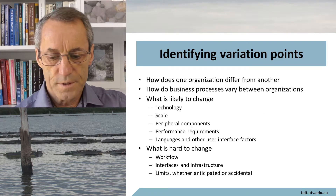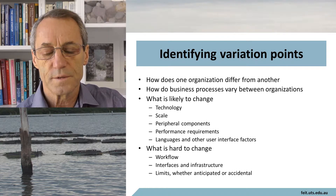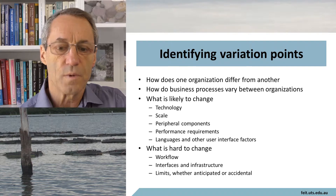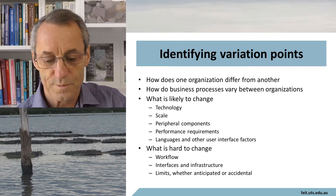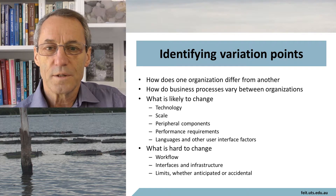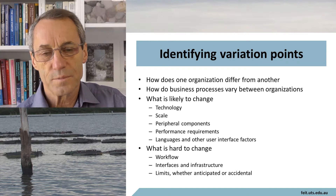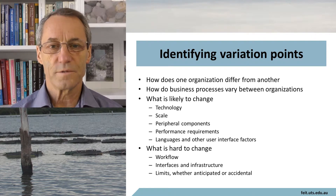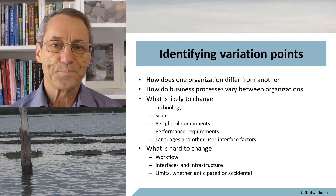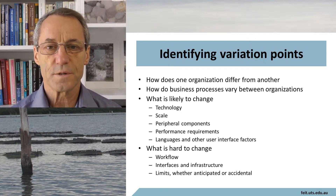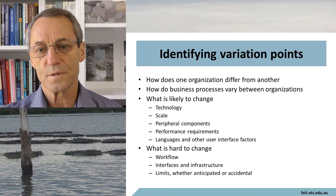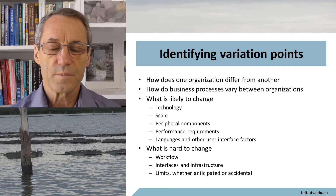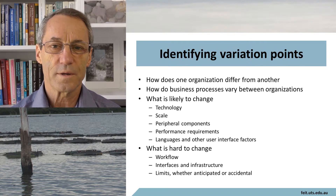When it comes to identifying variation points, look at how one organization differs from another. Are they different in technology, scale, peripheral components, performance requirements, languages, or other user interface features? Things that are hard to change include workflow, because it's embedded across so much of the architecture — it's implemented in the architecture such that changing it would mean changing the fundamental architecture. Interfaces and infrastructure also tend to be somewhat fixed within the architecture, referring to the interface between architectural components, not the user interface. Most architectures run out of steam when their limits are reached.